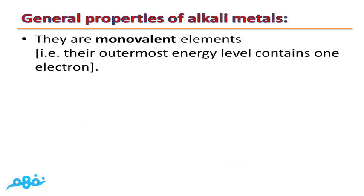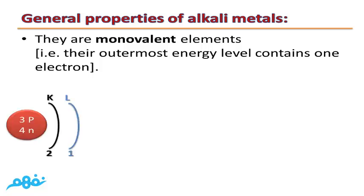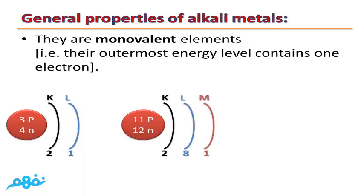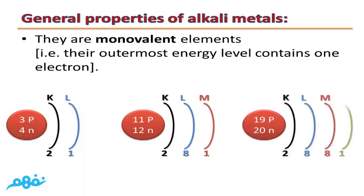The third property is they are monovalent elements. In other words, their outermost energy level contains only one electron. For example, lithium's outermost energy level L contains only one electron; sodium's outermost energy level M contains one electron; and potassium's outermost energy level N contains one electron. So elements of Group 1A are monovalent because their outermost energy level contains one electron.